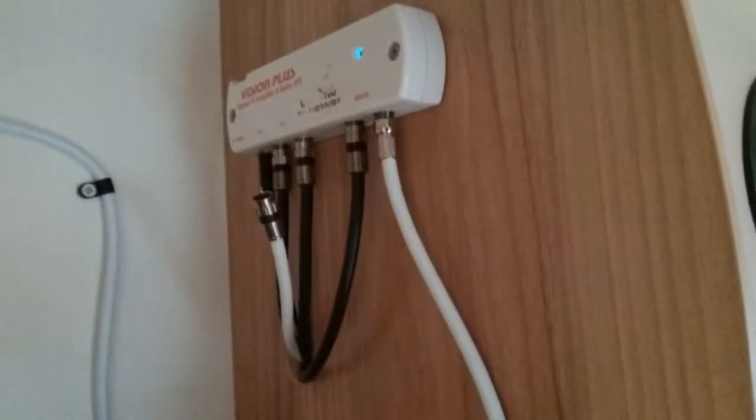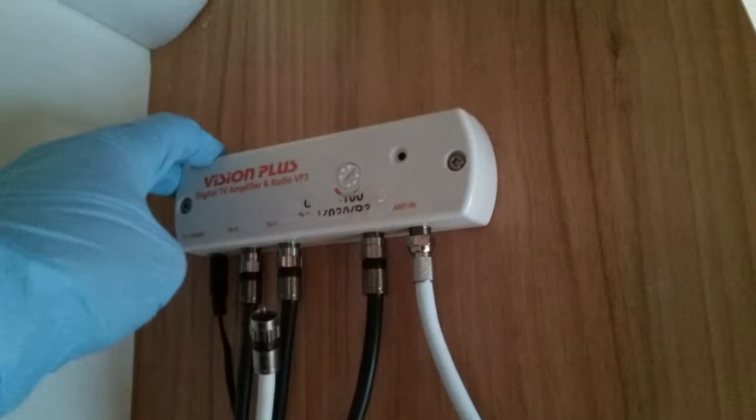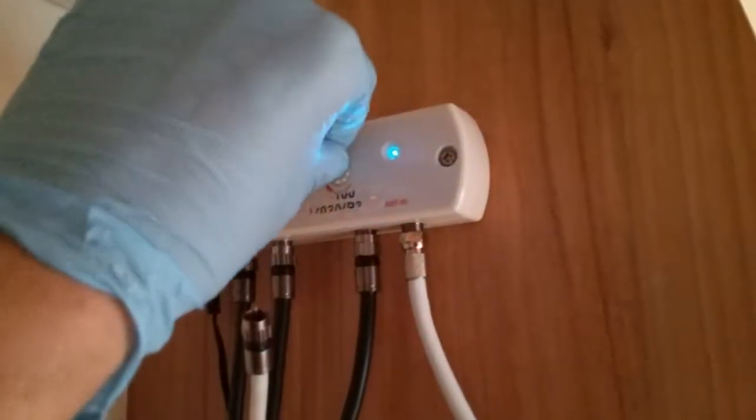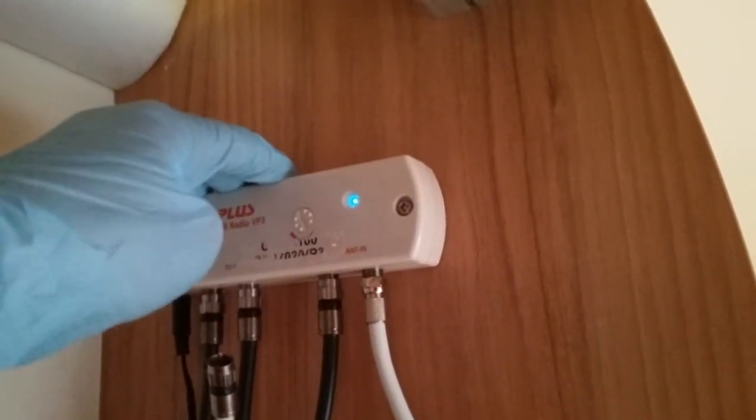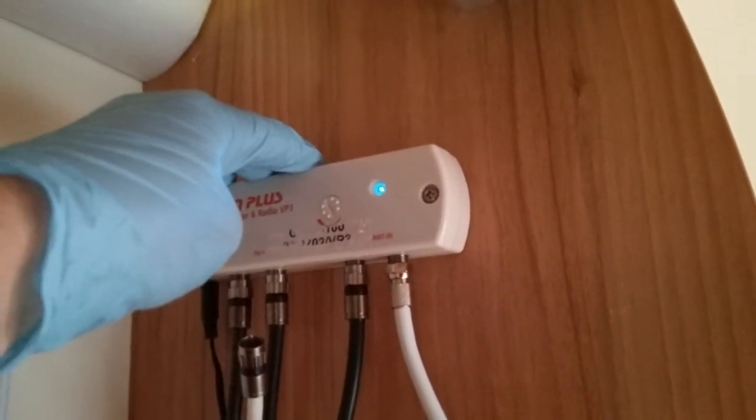On this side here is the digital amplifier for the television aerial, so on and off on the top here, and then control the boost here. Do make sure it's on before trying to tune a television in, or otherwise it will not find any channels.